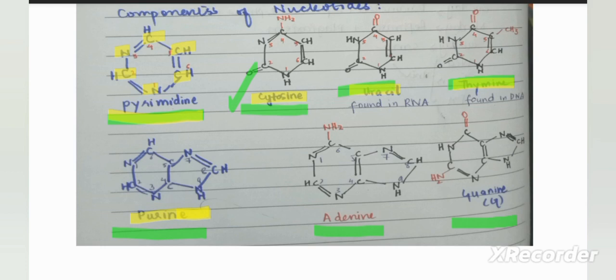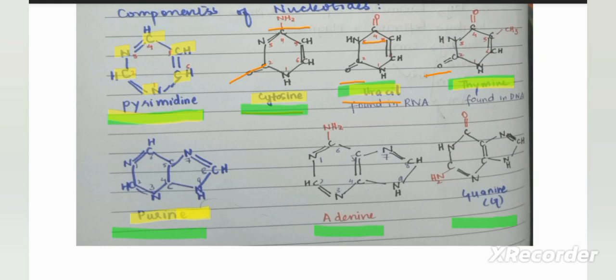The difference between cytosine, uracil, and thymine: in cytosine, an NH2 group is present at carbon number 4. In uracil, a carbonyl group is present at carbon number 4. In thymine, a carbonyl group is present at carbon number 4 and a methyl group is also present at carbon 5. All three have a six-atom-containing ring and a carbonyl group at carbon number 2. The difference lies at carbon 4: NH2 in cytosine, carbonyl in uracil, and both carbonyl and methyl groups in thymine.